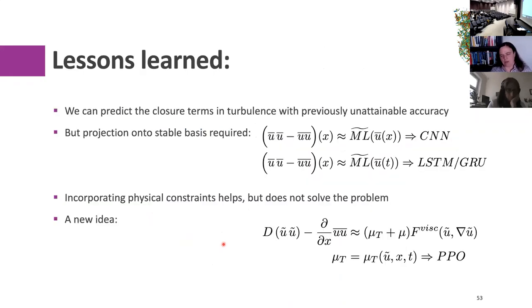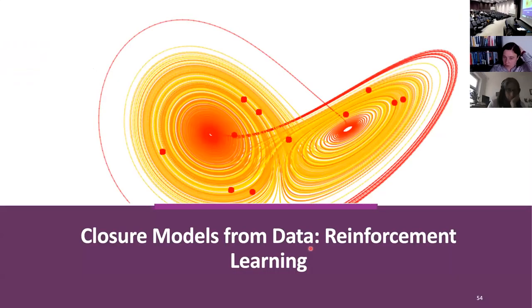We came up with the insight that if you want to do practical, real LES, don't try to match the a priori closure term — try to actually predict or model the true discretization-dependent closure term. But how can you do that if this term is generated by your discretization during the run? This is where a new type of machine learning comes into play: reinforcement learning.